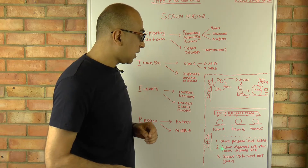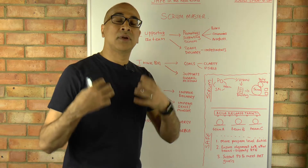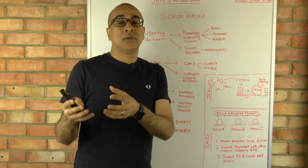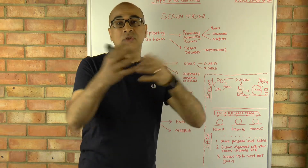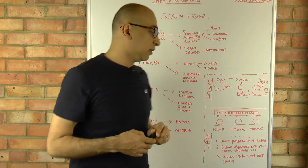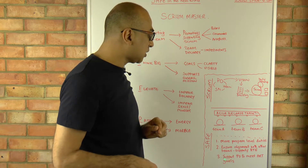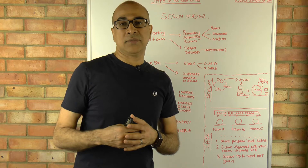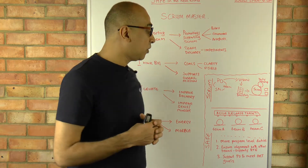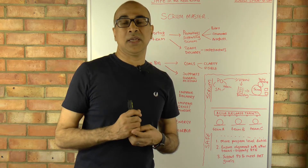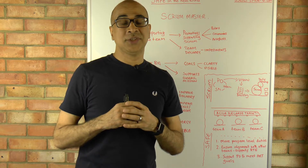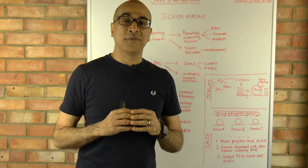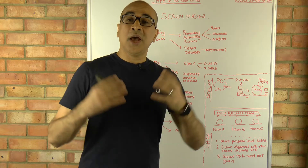The Scrum Master in SAFe also needs to ensure greater alignment by working with the Release Train Engineer and other teams. For example, if you're building a component that depends on a story from another team, you may need to coordinate with that team's Scrum Master to get the deliverable at the right time. Finally, the Scrum Master supports the product owner in making sure the ART goals are met. The focus in SAFe is not just on the individual team but on supporting the overall Agile Release Train — a slightly more holistic, wider view.